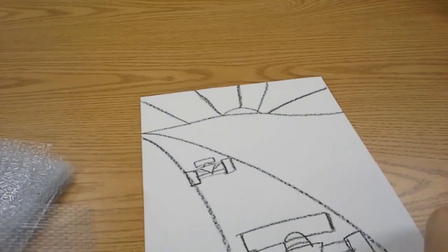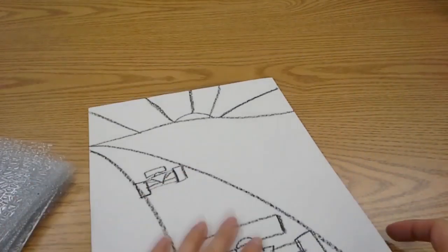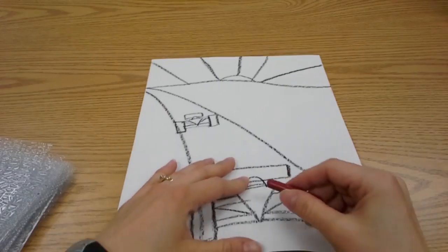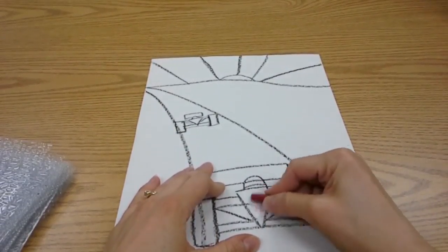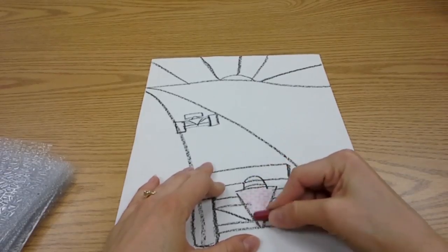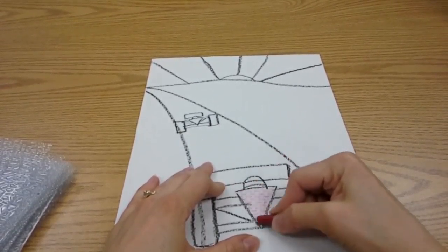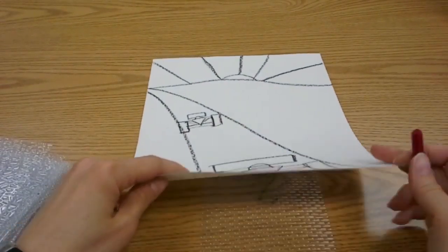And we stick it under our paper. And then you rub with a crayon. And when you rub, that pattern on the texture plate is going to show up on your page. You're still trying to color nice like you normally do.